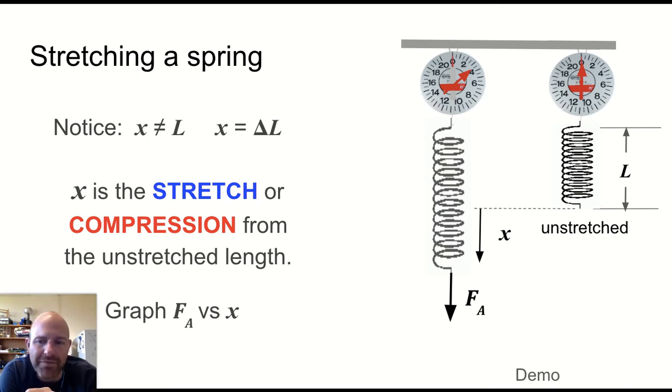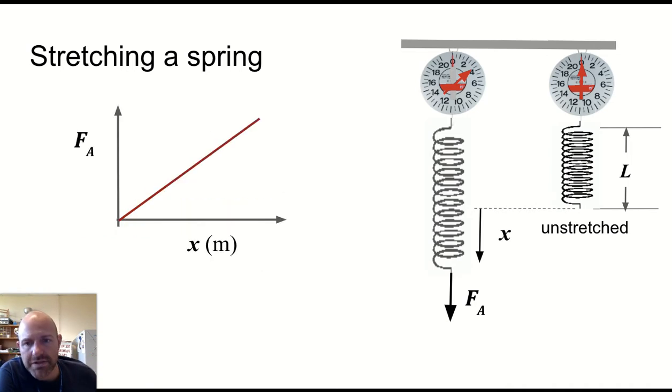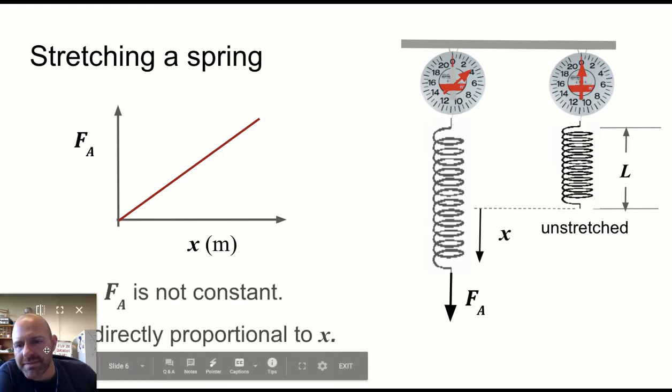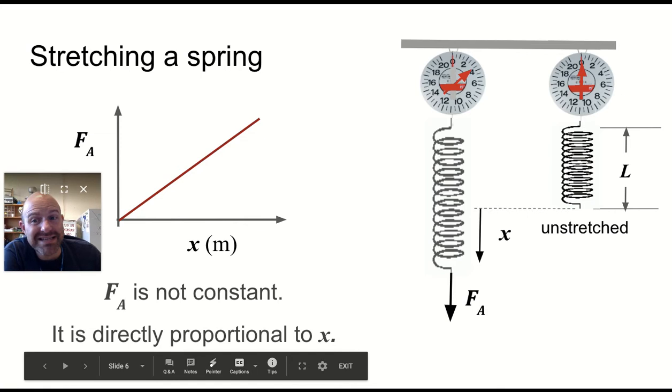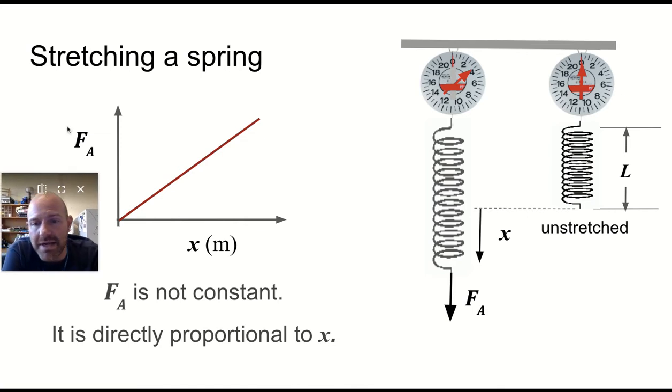And so what we want to do is we want to graph the applied force, how much we apply to this versus the position. And so if we were to do that, I've got a demo later of the spring force, and we'll get to that. But if you were to stretch a spring, you would find that the more you stretch a spring, the bigger the force required, or the harder you pull, the more it stretches, and it would do so in a linear way. If you double the force, you double the stretch length. If you double the stretch length, you have to apply twice the force. And this means that the applied force is not a constant force, but it is directly proportional to the stretch length, which is something we can deal with. We're pretty good at looking at linear relationships.